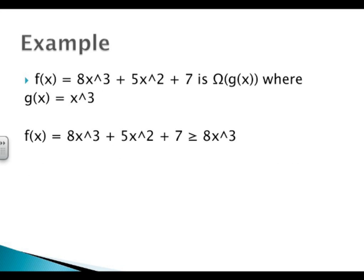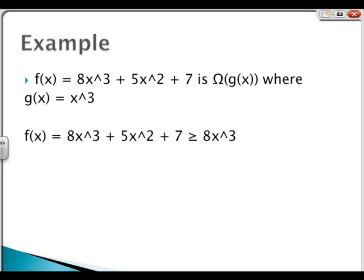For the mathematical example: x cubed plus 5x squared plus 7 is Big Omega of g of x, where g of x is x cubed. Our constant c equals 8. You multiply g of x times 8, giving 8x cubed. But that's not going to be as big as f of x because you also have 8x cubed plus whatever 5x squared plus 7 equals. So obviously that's going to grow quicker.